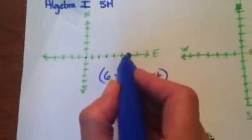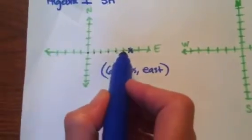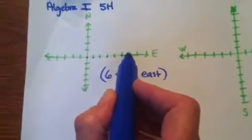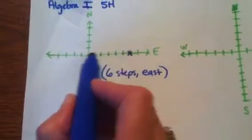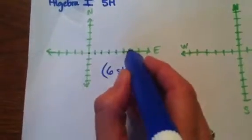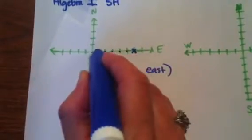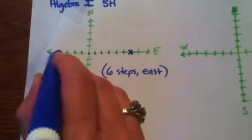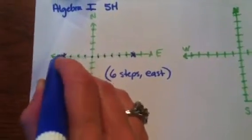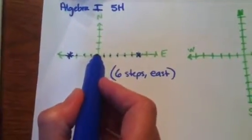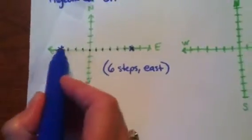Now in number 2, it says the ant in number 1 continues its journey, but it goes 10 steps west. Notice it's going the other direction. So you could just count 10: 1, 2, 3, 4, 5, 6, 7, 8, 9, 10. So now my ant is right here. Notice he is from the origin, he is four steps: 1, 2, 3, four steps from the origin.